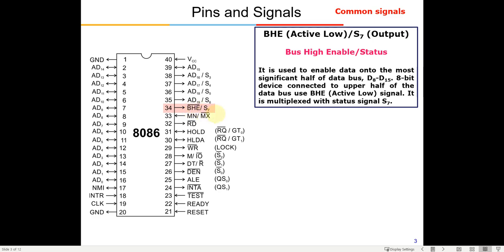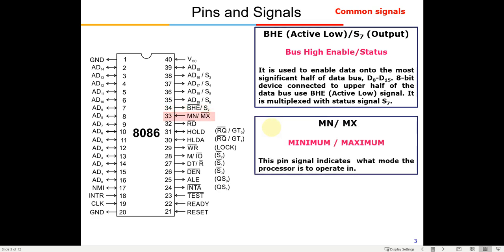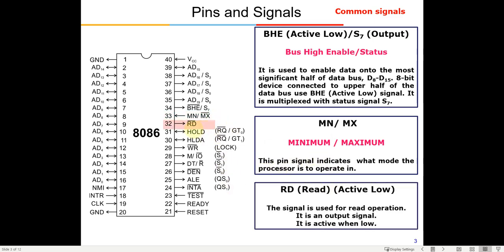The MIN/MAX pin selects the mode of operation, as already discussed. The READ-bar signal tells the memory that the microprocessor is going to read data; the memory then activates the appropriate memory cell based on the address placed on the bus, and the sense amplifier provides the requested data.